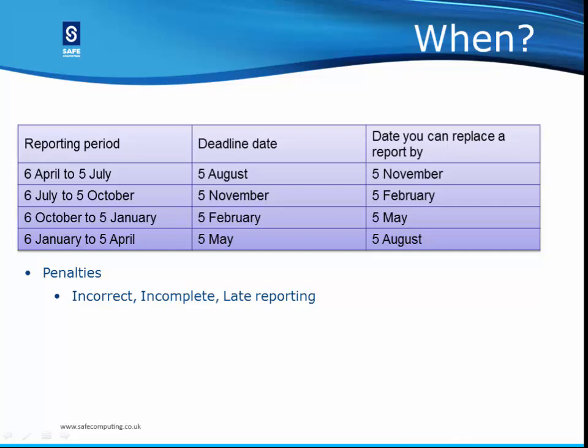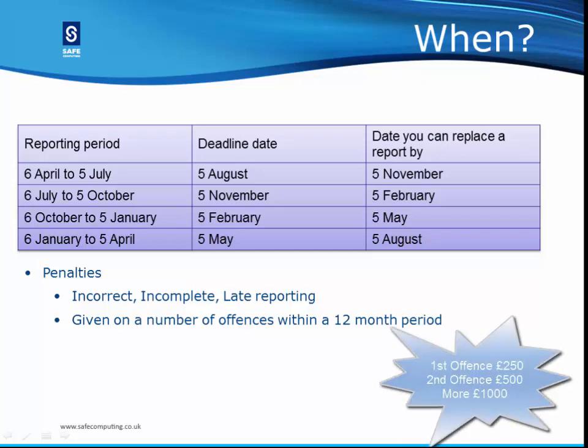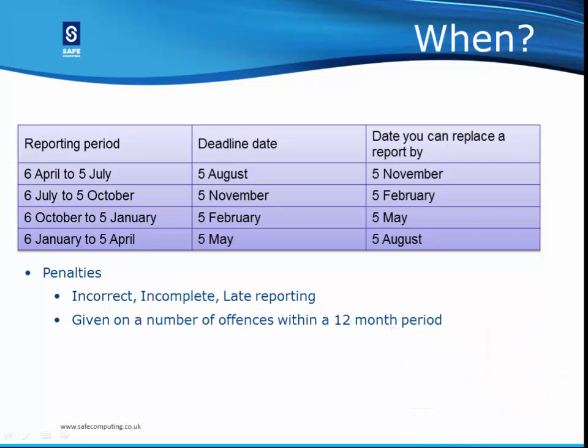There are automatic penalties for not sending a report or for sending a late report. These are based on the number of offences in a 12-month period: £250 for the first offence, £500 for the second offence, and £1,000 for a later offence. If there are 12 months or more between offences, you will only be charged £250 for the first offence in the new 12-month period.